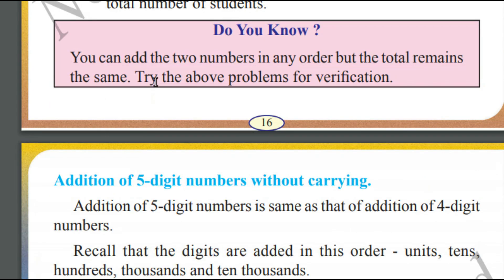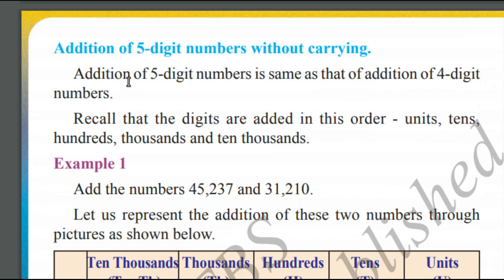We can add 2 numbers in any order. We can start with the units place, the tens place, or any other place. The process remains similar — we just need to modify the method to ourselves. Addition of 5-digit numbers without carrying.